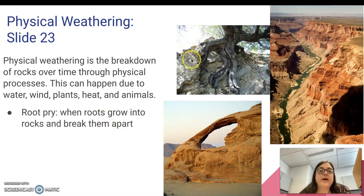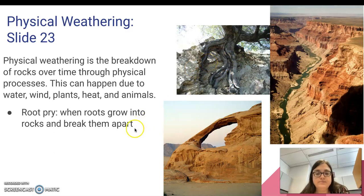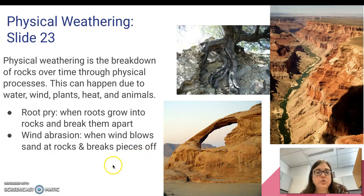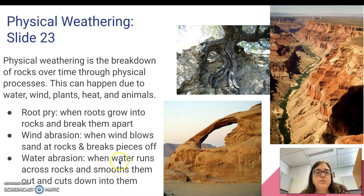Root pry, like we can see with the plant, is when roots grow into the rocks and break them apart. Wind abrasion is when wind blows sand at rocks and breaks pieces off, and eventually it can lead to very interesting shapes and holes in the rock. Water abrasion is when water runs across rocks and smooths them out and cuts down into them, which can create canyons like we can see right here.